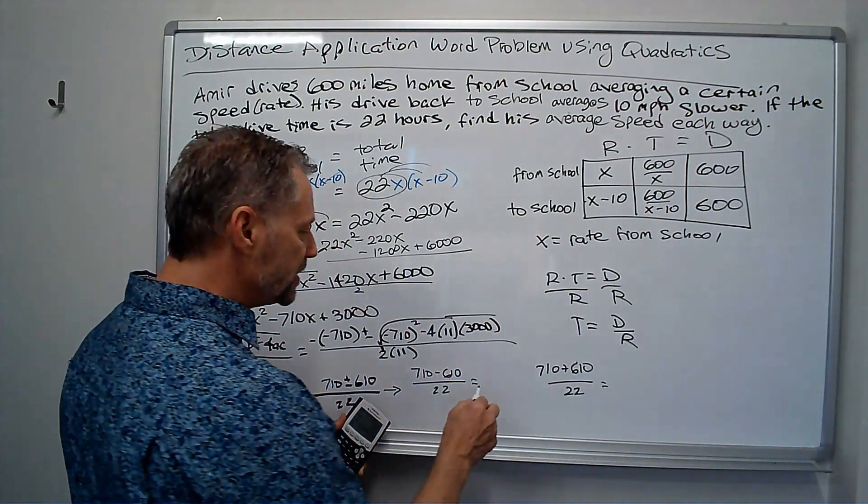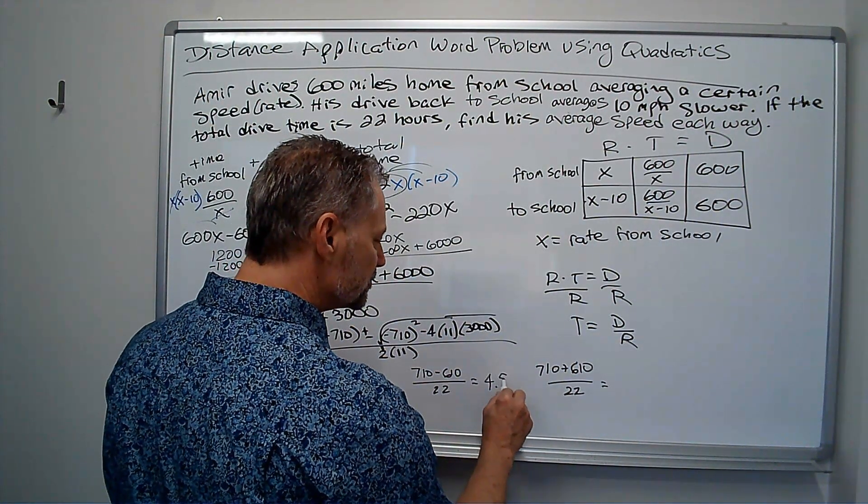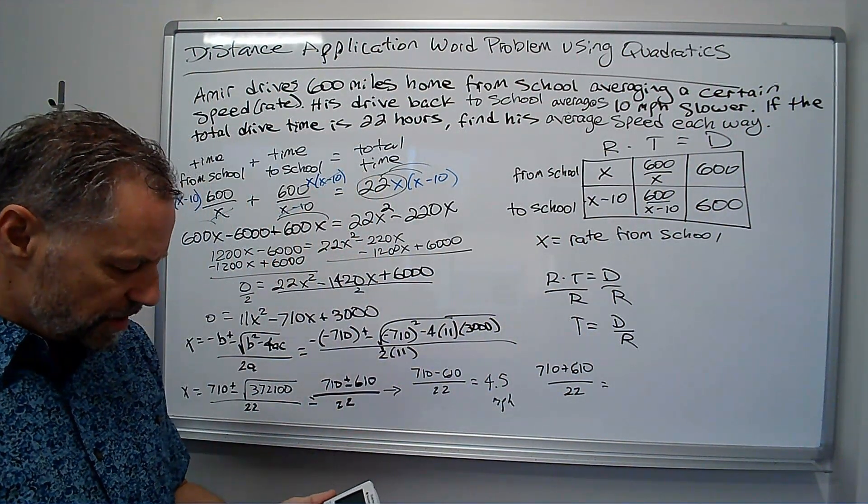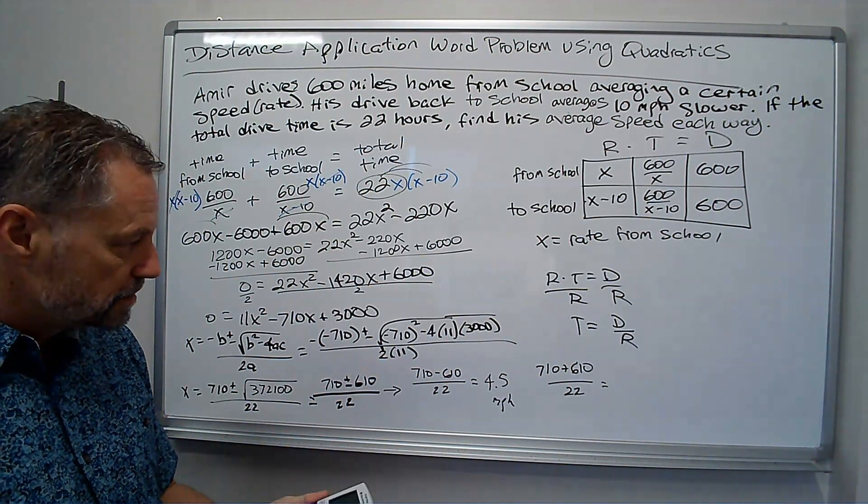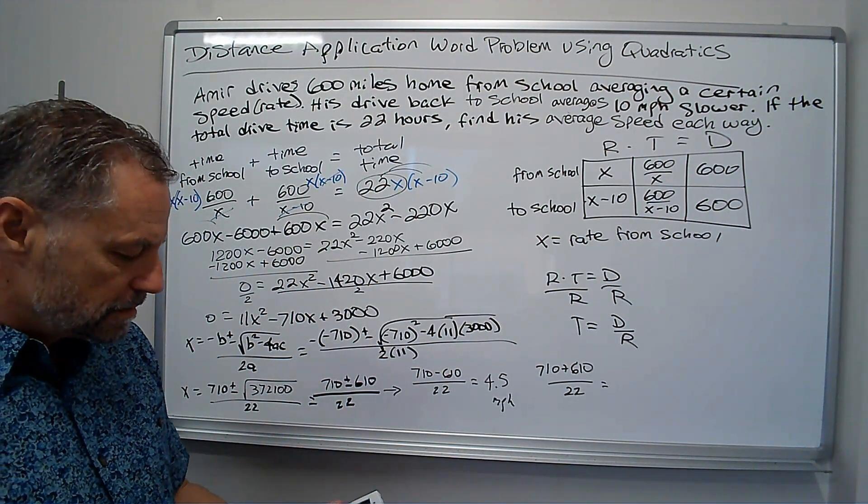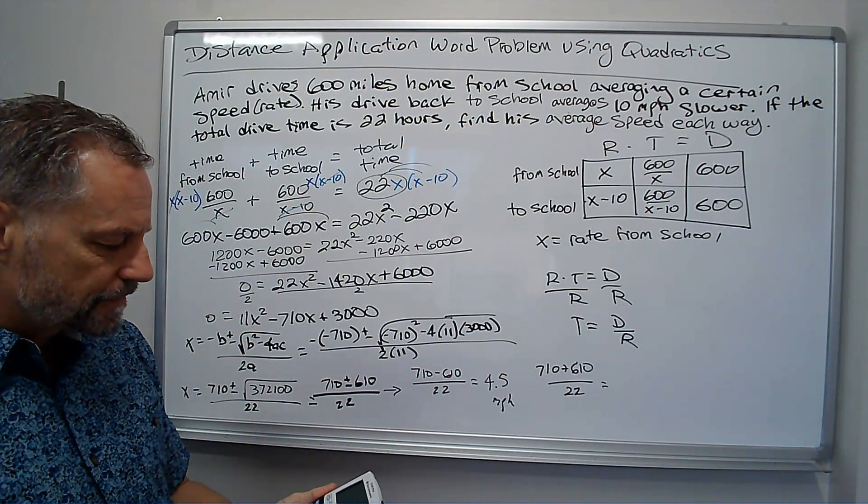And 710 plus 610 divided by 22. So, the first one is 100 divided by 22, which is 4.5 rounded off miles per hour. The other one, 710 plus 610 divided by 22, is 60.